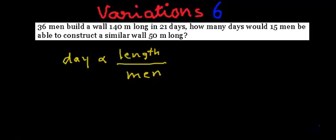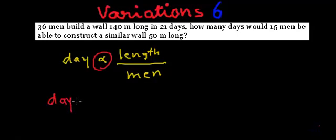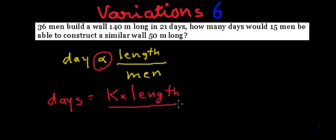In this particular problem, the number of days required to build the wall is directly proportional to the length of the wall, but indirectly proportional to the number of men working on it. So if we remove the proportional sign, we substitute it with an equal sign and a constant, giving us: Days = k × Length / Men.